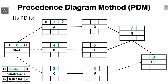For activity A, early start is zero and early finish is zero plus two, giving two. For activity B, early start is zero (the early finish of the previous activity) and early finish is zero plus four, giving four. For activity C, early start is zero and early finish is zero plus three, giving three. For activity D, early start is two (the early finish of activity A) and early finish is two plus one, giving three. For activity E, early start is four and early finish is four plus six, giving ten.